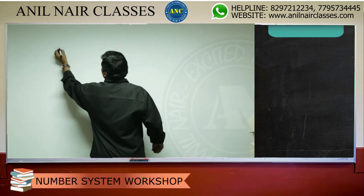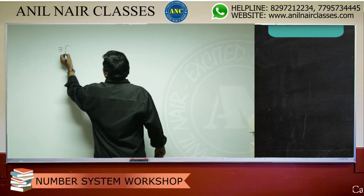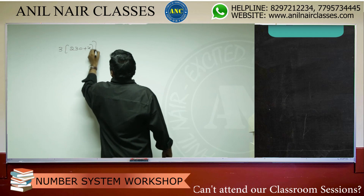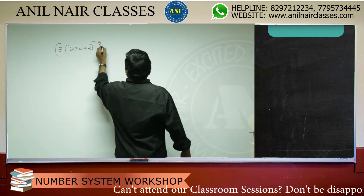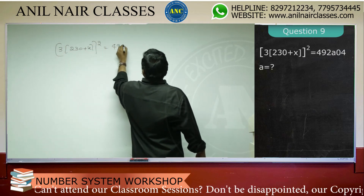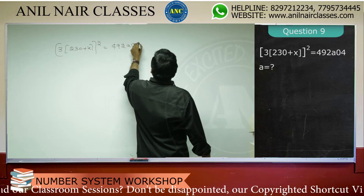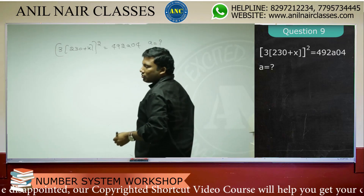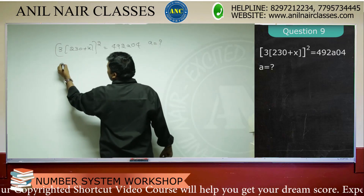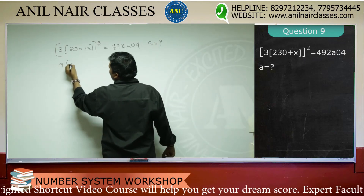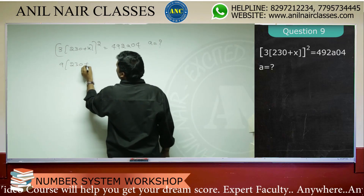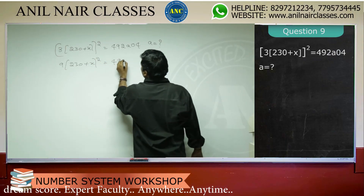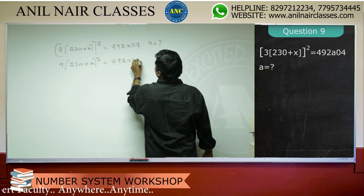Let us take a question: 3 into 230 plus x, whole square, equivalent to 492A04. So if I open the bracket, this will be 9 into 230 plus x whole square, equivalent to 492A04.